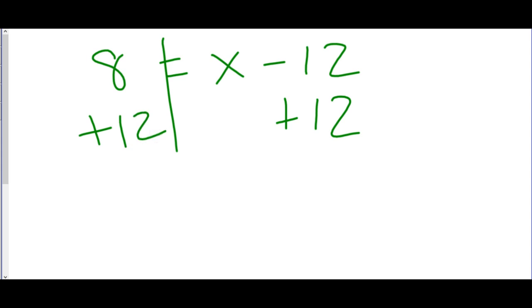So we're going to add 12 to both sides. Now I draw that line in the middle, so I make sure I'm on both sides of that line. I'm on the right side of the line, and on the left side of the line when I add that 12. So the 12s cancel, because they were opposites. I bring the x down, and 8 plus 12 is 20.